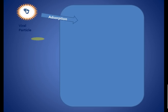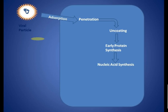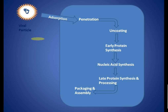First is adsorption — the viral particle has to be adsorbed and penetrate the cell. After penetrating, it has to uncoat its envelope and release the viral mRNA and DNA. Then there is early protein synthesis, nucleic acid synthesis, late protein synthesis and processing, and the viral DNA encodes proteins for daughter virions. Then there is packaging and assembly, and finally release of viral particles to infect new host cells.